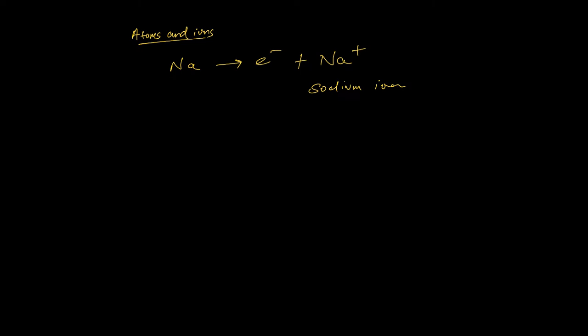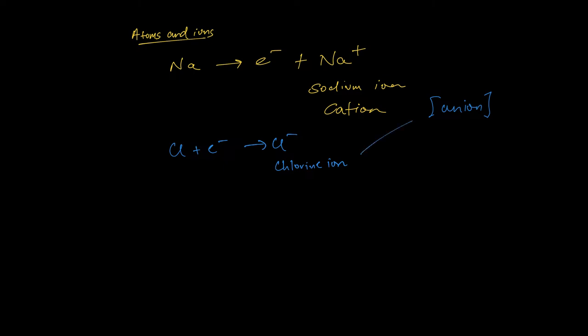Following through from chemistry, a positively charged ion is called a cation, and a negatively charged ion is called an anion. Generally, metals will take on a positive charge, and non-metals will take on a negative charge. For example, chlorine gains an electron, so it has an excess of negative charge and becomes a chlorine ion — that is an anion. So you can gain an electron and become a negatively charged ion, or lose an electron and become a positively charged ion.